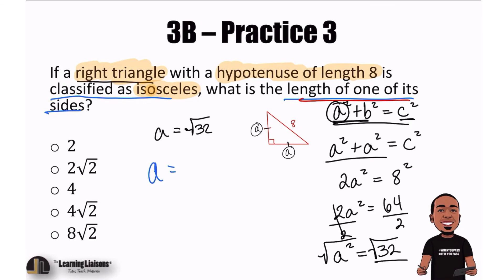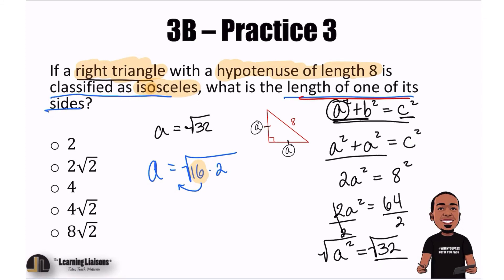32, is there a perfect square that can multiply to 32? This is how we're going to simplify. And remember, 32 is 16 times 2. 16 is a perfect square. So because of that, 16 can leave the square root symbol after we take its square root. The square root of 16 is 4. So that would be A equals 4. And we still have the square root of 2 right there. And so our answer here is 4 square root 2. Boom. All good.